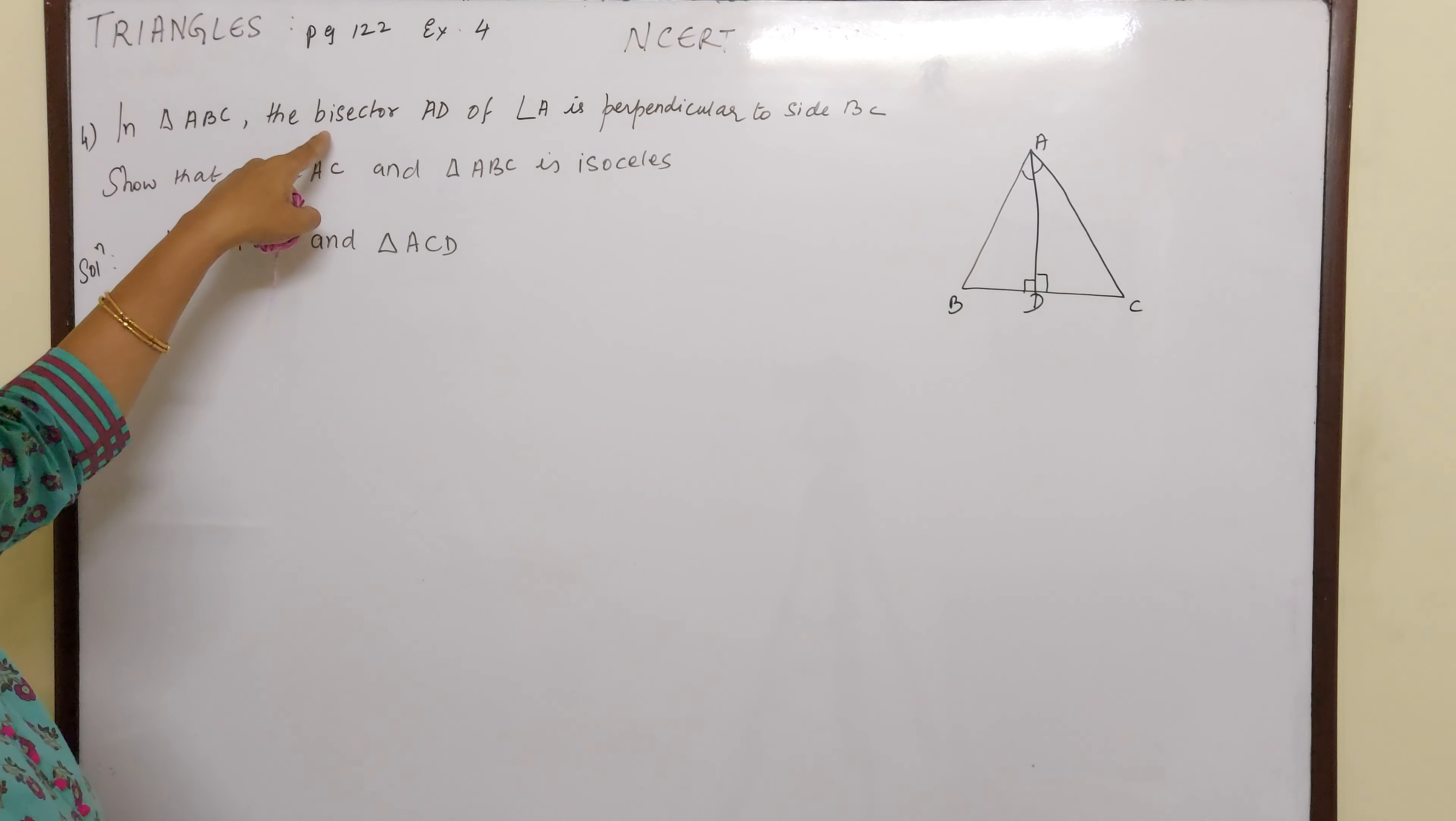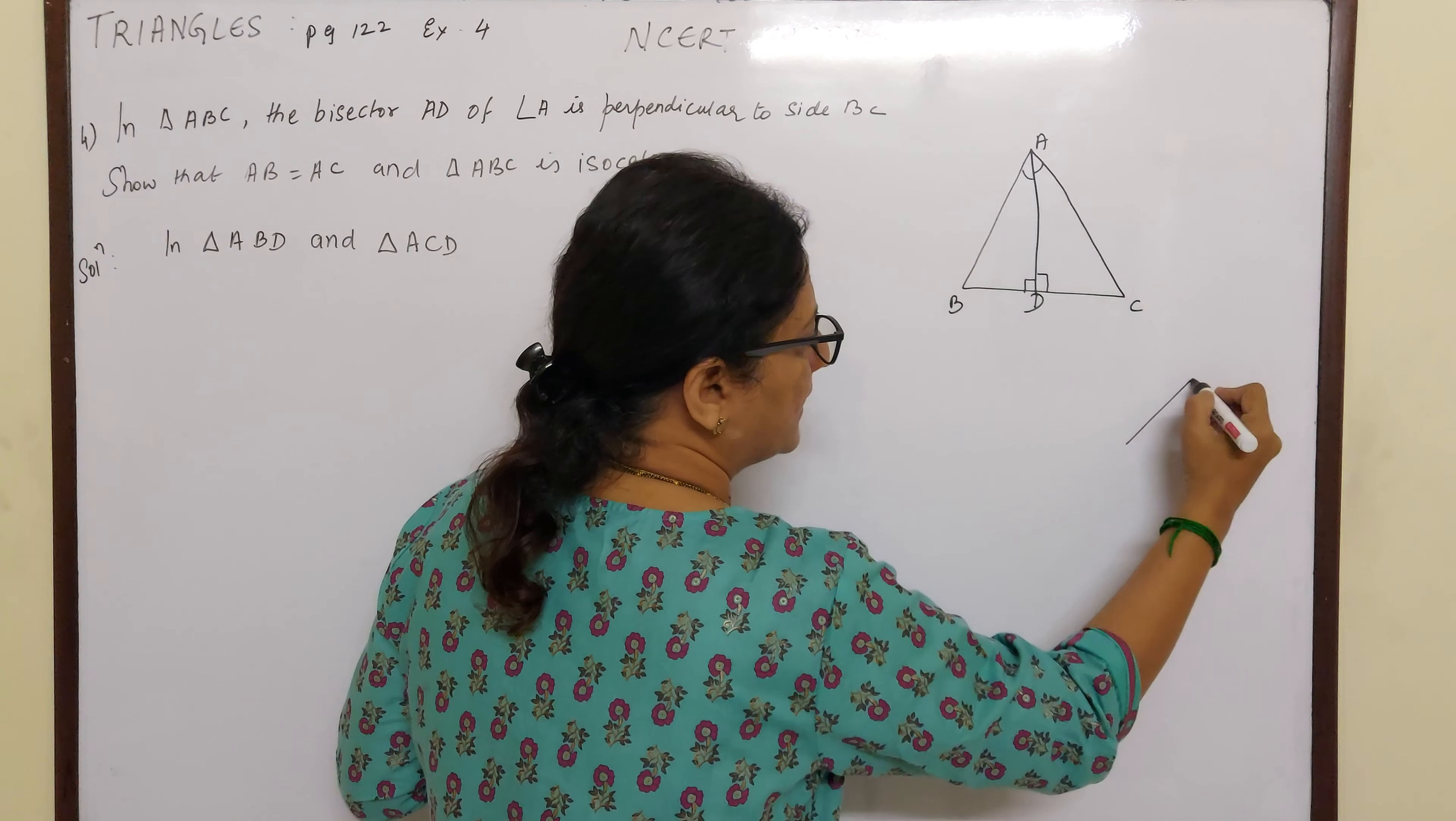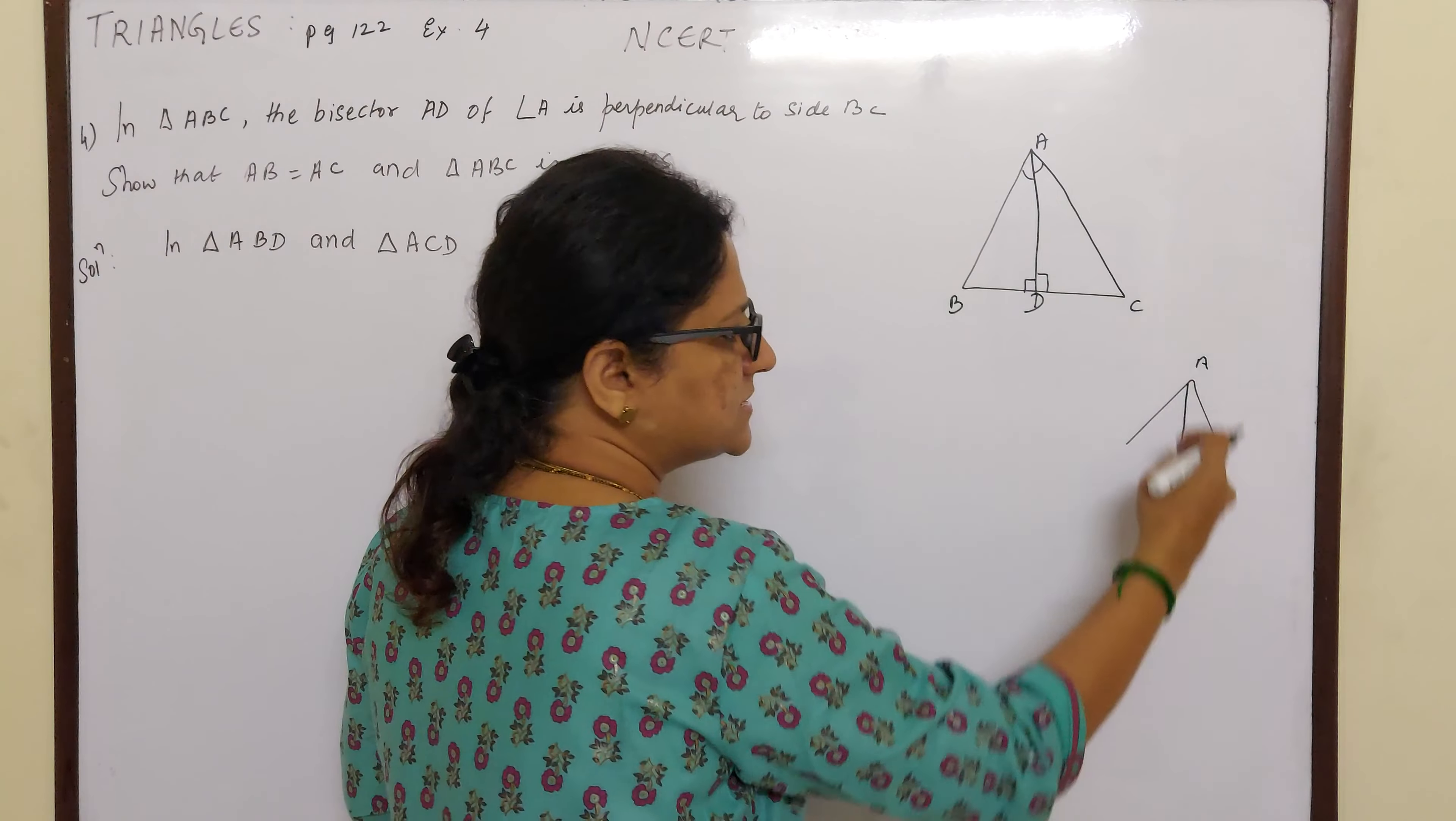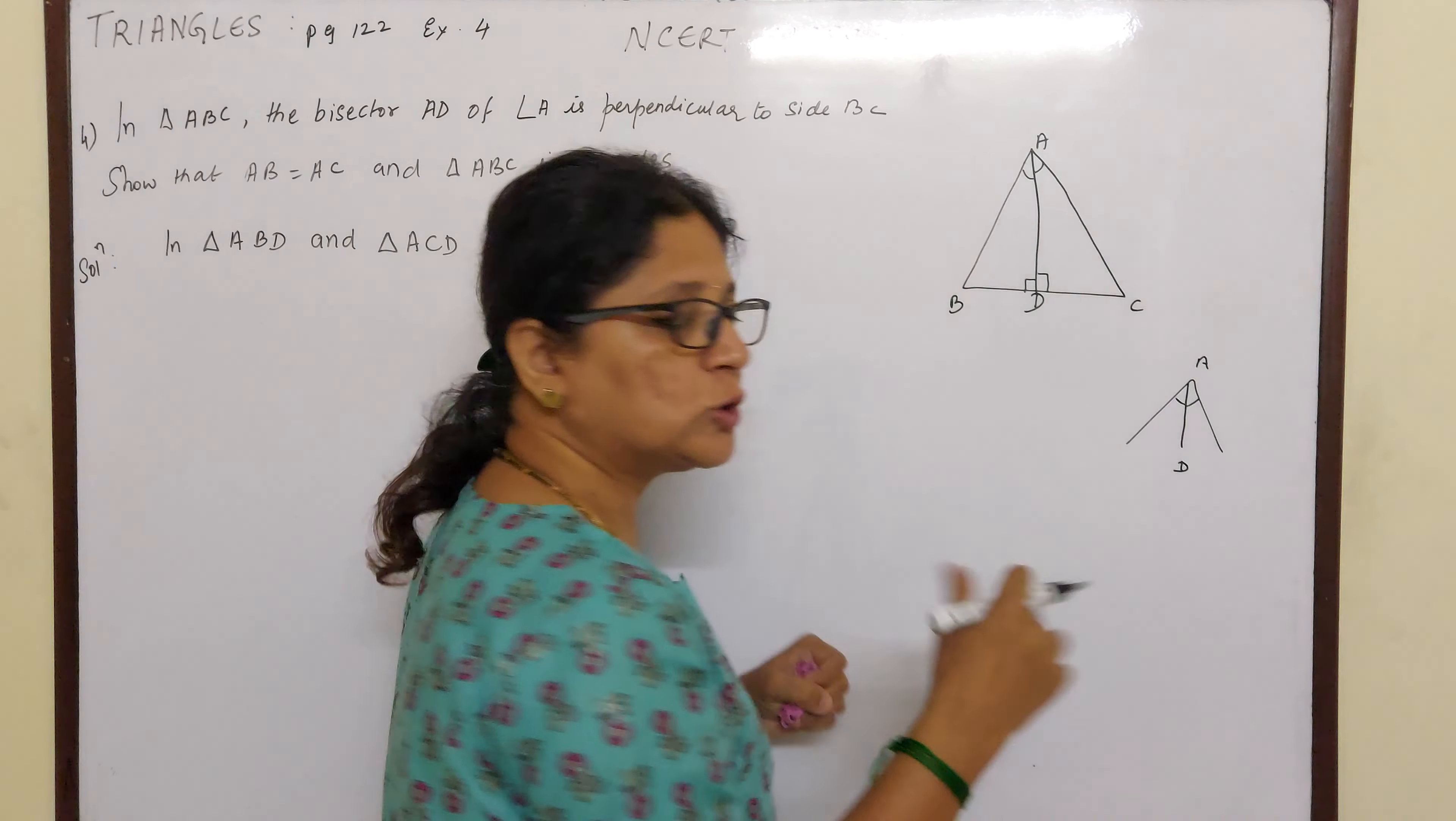So from this given information, the bisector AD of angle A - see children, this is your angle A and this is the bisector of angle A. So this AD line is cutting this angle into two equal parts.